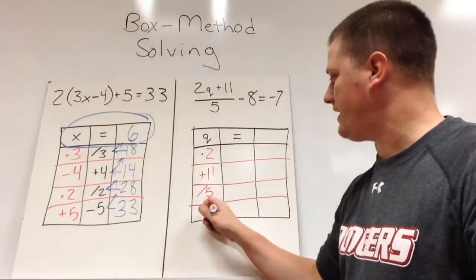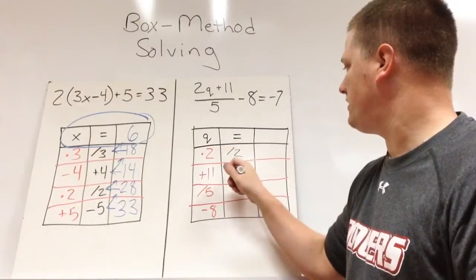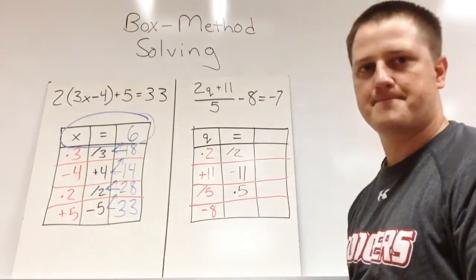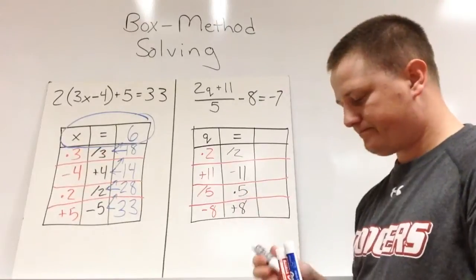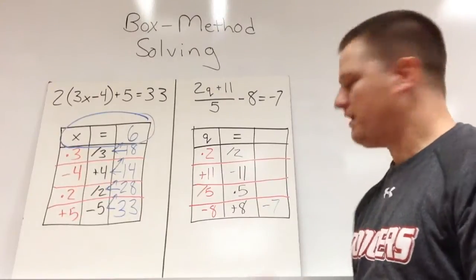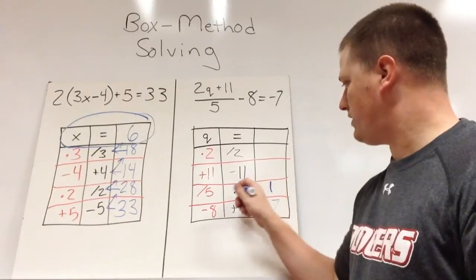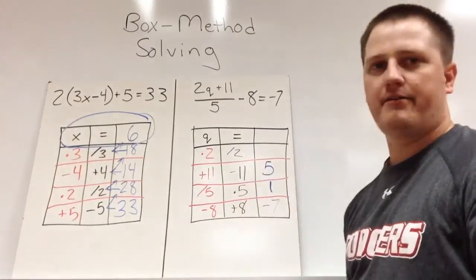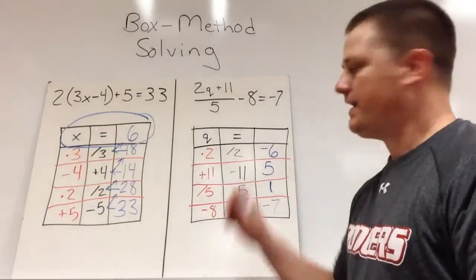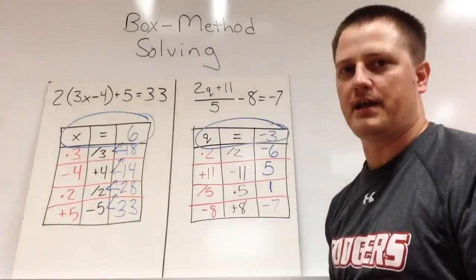And lastly here we've got to subtract eight which leaves our opposites in the middle as being divide by two, minus eleven, times five this time, and add eight here. And then we work backwards through these with our starting answer of negative seven. So negative seven plus eight will give us positive one. Positive one times five would give us five. Five minus eleven would give us negative six. And negative six divided by two would give us negative three. So Q started as negative three.